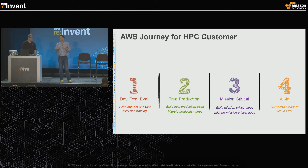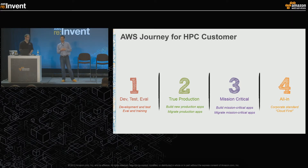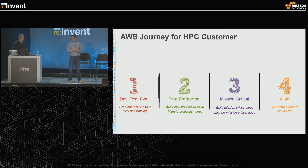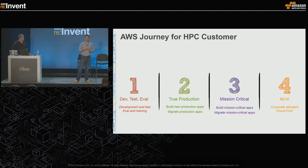So what is the AWS journey for the HPC customer? Typically we see customers start in test, dev, and evaluation. A typical evaluation use case is when Intel comes out with a new processor and you want to see how it impacts your application. Is it going to be faster? Should you invest in it? Also for test and development - if you're writing custom applications for your Windows HPC cluster, time on that cluster is an expensive resource, so leveraging the cloud for test and dev alleviates capacity on-premises so you can focus it on production.